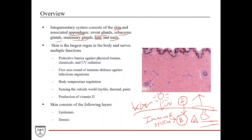Since the skin is interacting with the outside world, it helps us sense the outside world — we have tactile sensation, thermal sensation, and pain. UV radiation also helps catalyze one of the steps of vitamin D production, so the skin is very important for vitamin D production. The skin consists of two main layers: the epidermis and the dermis. This is an H&E stained slide from the skin, and you can see the epidermis up at the surface.